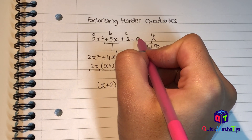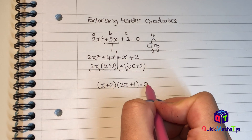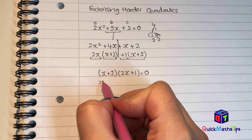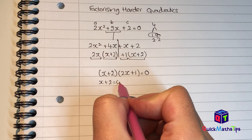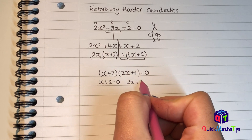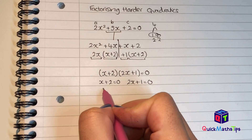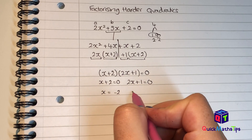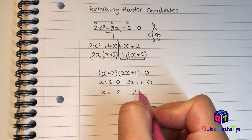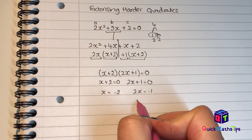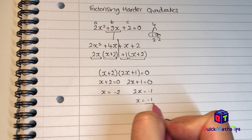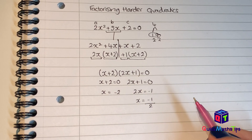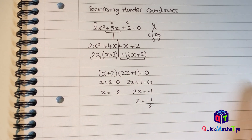If the question said solve it and this equation was equal to 0, we set x plus 2 equal to 0 and 2x plus 1 equal to 0. Subtracting 2 gives x equals negative 2. Subtracting 1 gives 2x equals negative 1, and dividing by 2 gives x equals negative one half. So x equals minus 2 and x equals minus one half.